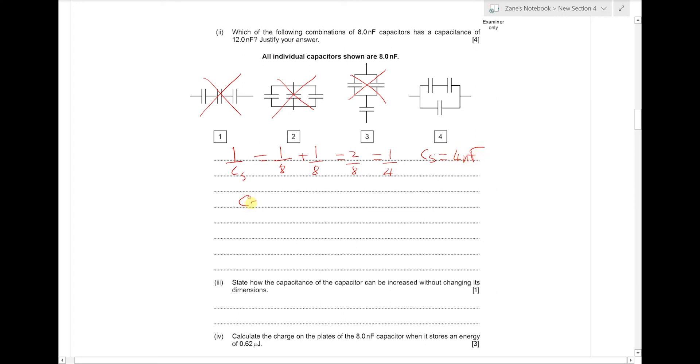And then simply, the total capacitance will be that 4 nF plus the 8 nF which it's in parallel with, giving us the correct answer of 12 nF. So the correct answer is arrangement number 4.